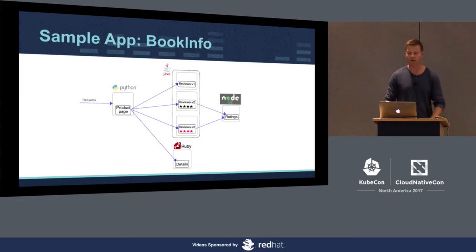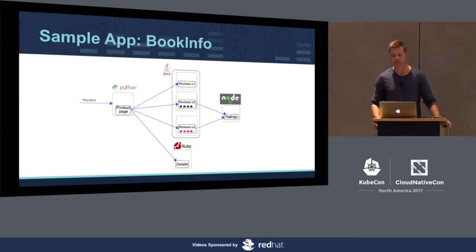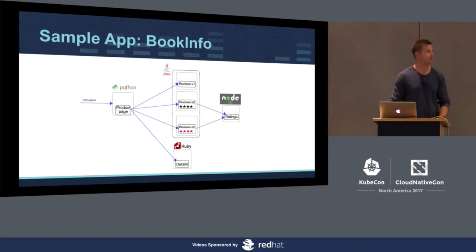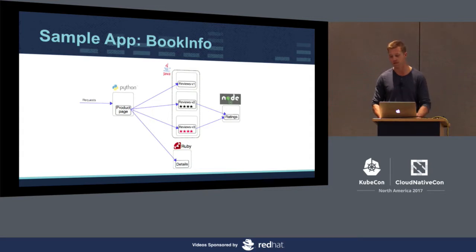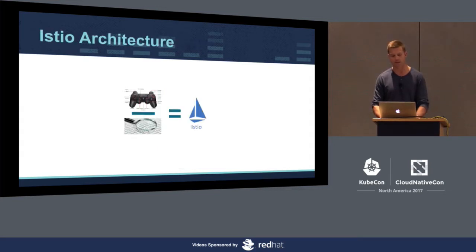Quickly, the Book Info app is made up of several microservices: a product page front end, a detail service, a rating service, and a review service that consists of multiple versions. Each version is running a separate pod. V1 shows no stars, V2 shows black stars, and V3 shows red stars.